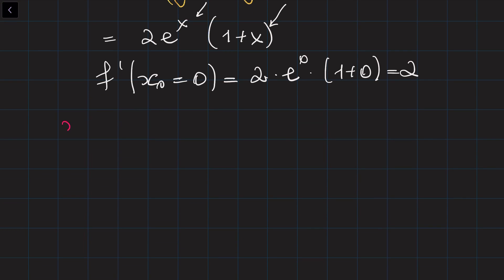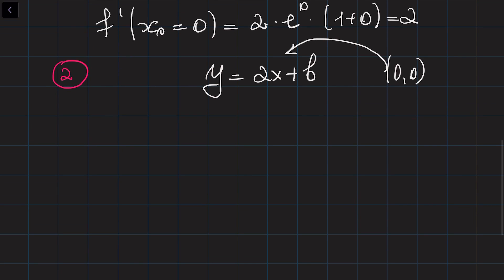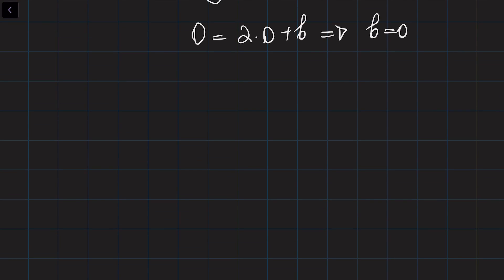Now the second part is to find b. We know the equation of the tangent line should be y equals 2x plus b. At the same time, we know that the point (0, 0) lies on the curve and also on this tangent line. So substituting 0 and 0, we get 0 equals 2 times 0 plus b, and it's clear that b equals 0. So we've got the equation of the tangent line, which is simply y equals 2x.